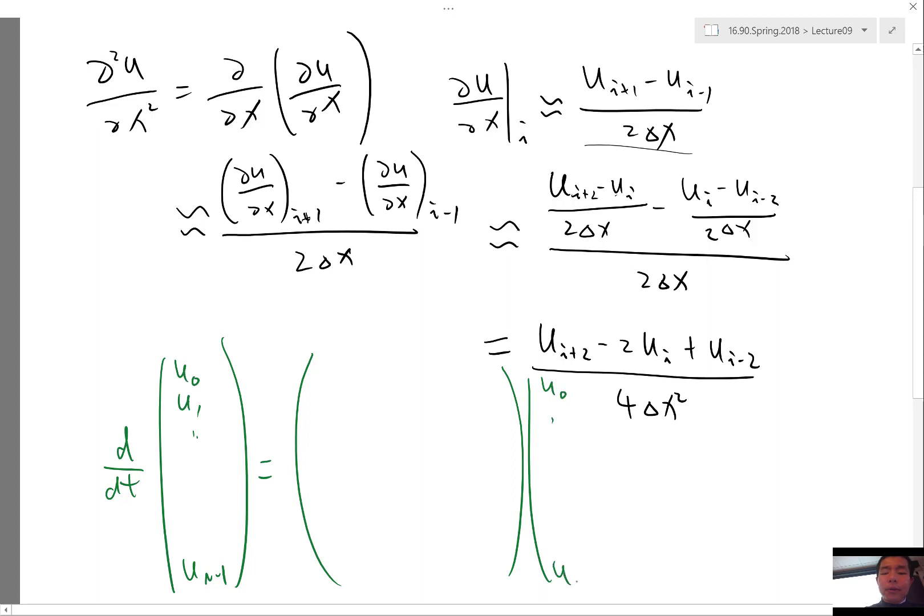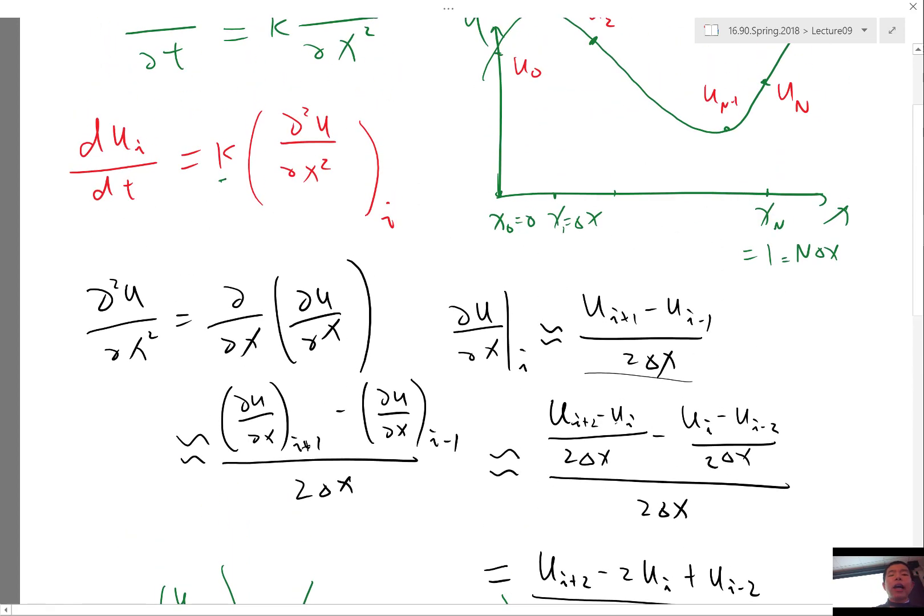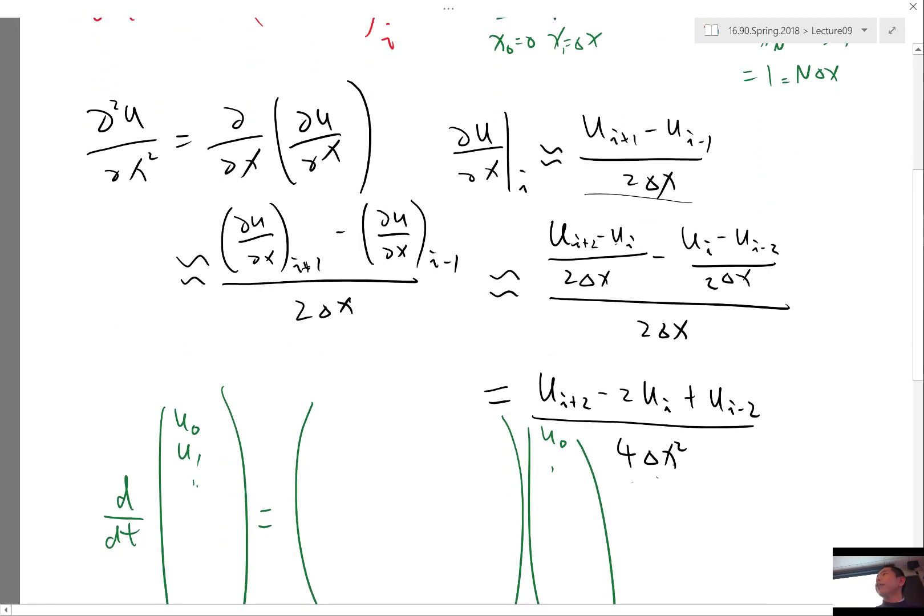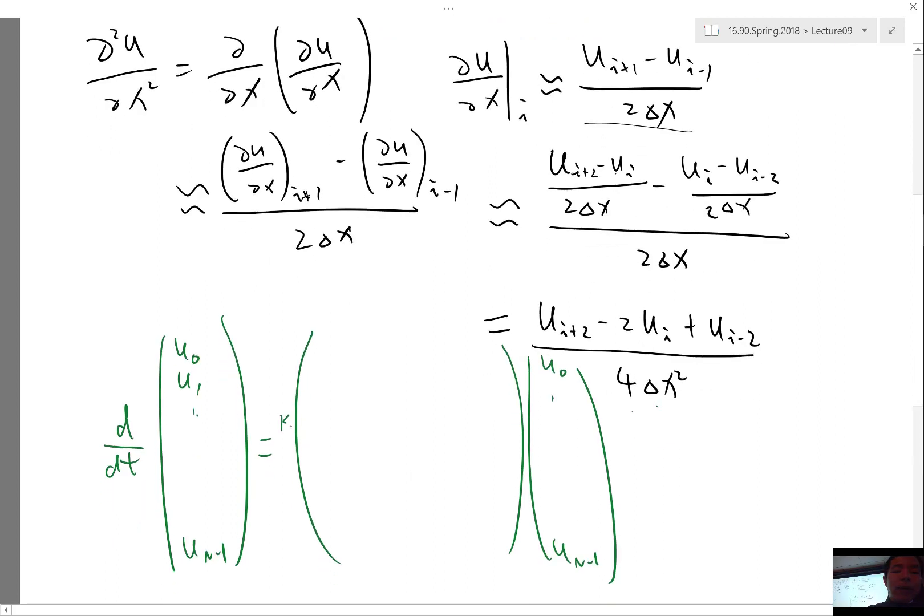The idea is how about we move the kappa over 4 delta x squared outside. What do we get? We have kappa over 4 delta x square.